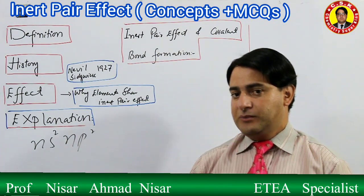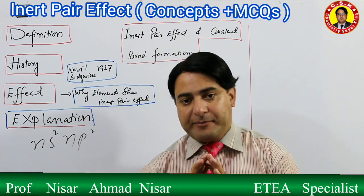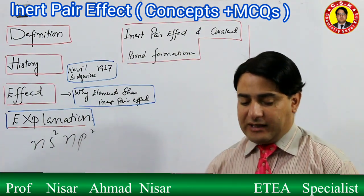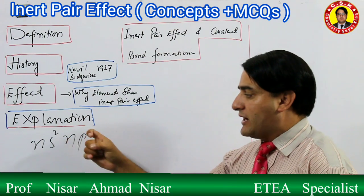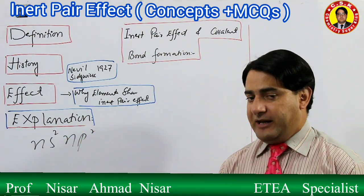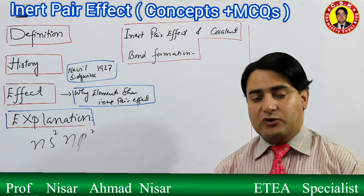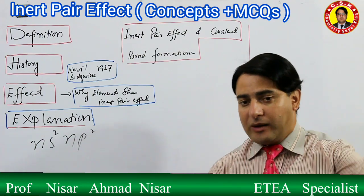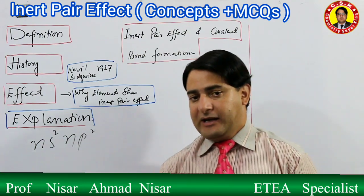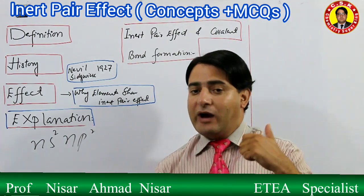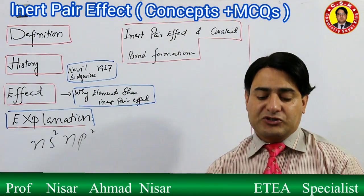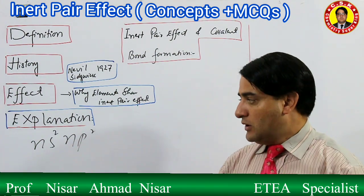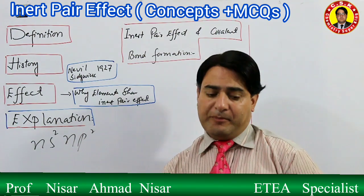If all four electrons participate in bonding, the compound formed will be covalent and the element will show a +4 oxidation state. There will be no Inert Pair Effect in this case. However, in the lower members of Group 4, which are Tin (Sn) and Lead (Pb)...